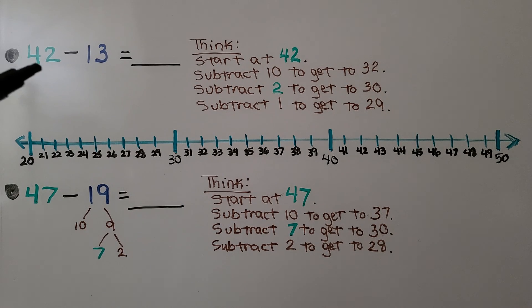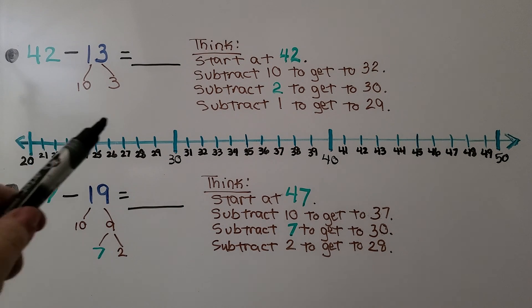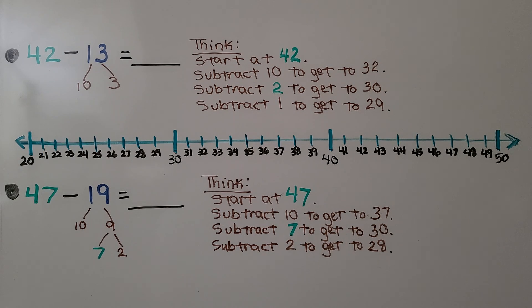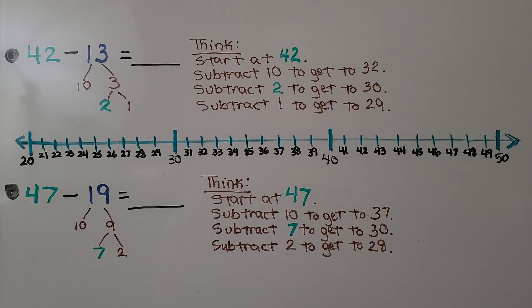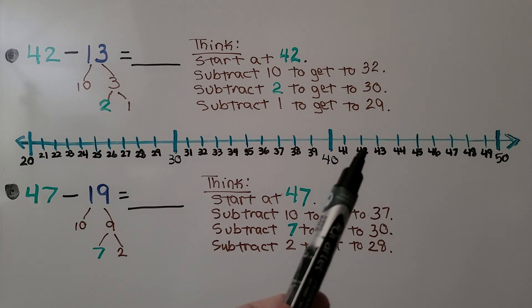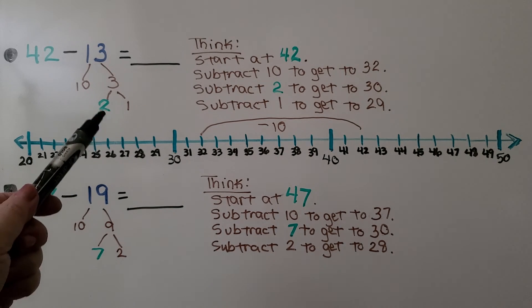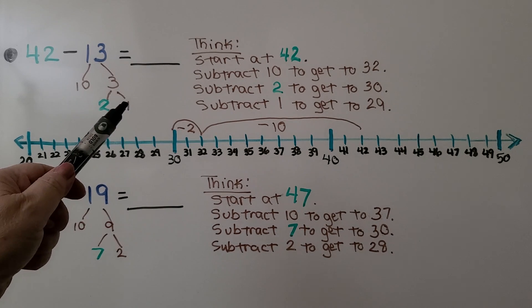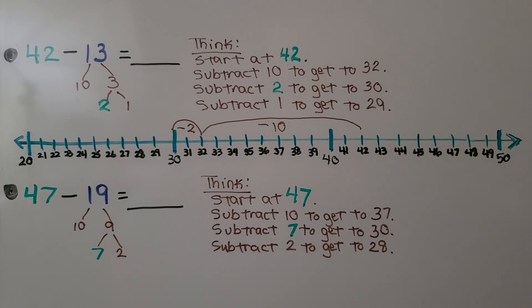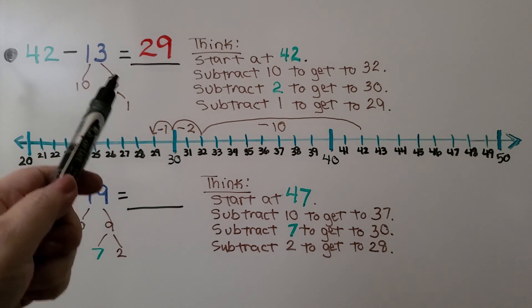Let's try it again with 42 minus 13. The first thing we do is break the 13 apart into a 10 and a 3. We see there's a 2 in the minuend's ones place, so we know 3 has to have a 2 as one of its add-ins. We know 2 plus 1 is equal to 3, so the other add-in must be a 1. On our number line, we start at 42 and subtract that 10 to get to 32. Then we subtract 2 to get to 30, a tens number. We subtract the 1 from 30 to get to 29. We subtracted 10, 2, and 1 to subtract 13. So 42 minus 13 is equal to 29.